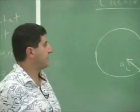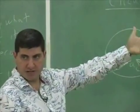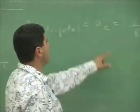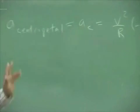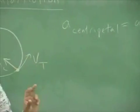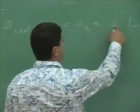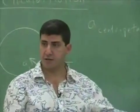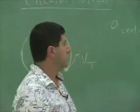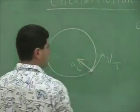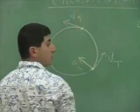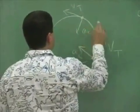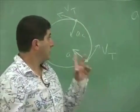In that previous problem we took the instantaneous speed — the magnitude of the velocity vector — squared it, and divided by r. This formula is not a definition of a_c; it is provable. We can do experiments to prove it. The negative r-hat just means the acceleration is towards the center, so wherever the object is on the circle, the centripetal acceleration always points toward the center.